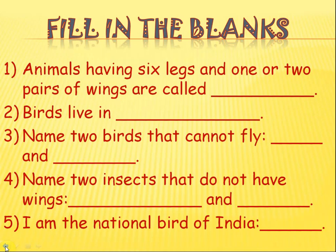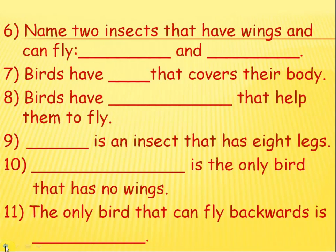Let us take question number 3: Name two birds that cannot fly. The kid can write ostrich and penguin here. Let us go to the next screen. There are a few questions covering both birds and insects. Now let us see question number 8: Birds have dash that help them to fly. It is wings that help a bird to fly, so the word wings will go in the blank place.